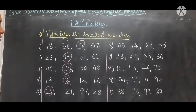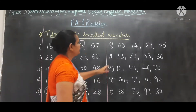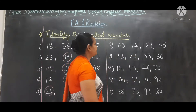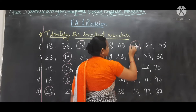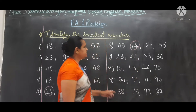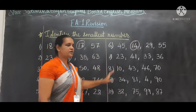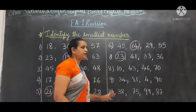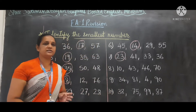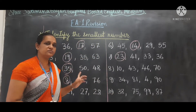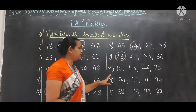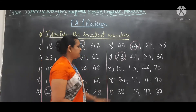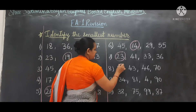Okay, next — which one is the smallest? 14. Next, in this which one is the smallest? 23. Here I am doing the circle, but you have to click on the smallest number. So your answer will get right. Now this one: 10.